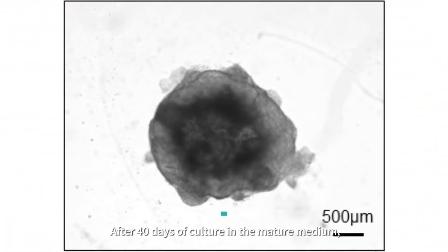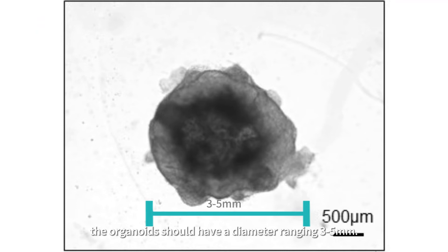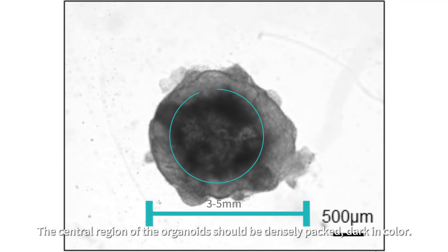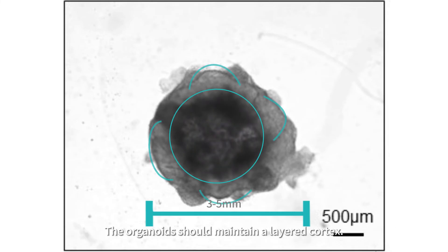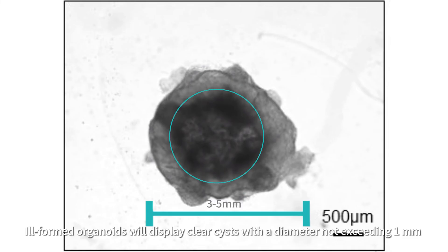After 40 days of culture in the maturation medium, the organoids should have a diameter ranging 3 to 5 millimeters. The central region of the organoids should be densely packed and dark in color. The organoids should maintain a layered cortex. Ill-formed organoids will display clear cysts with a diameter not exceeding 1 millimeter.